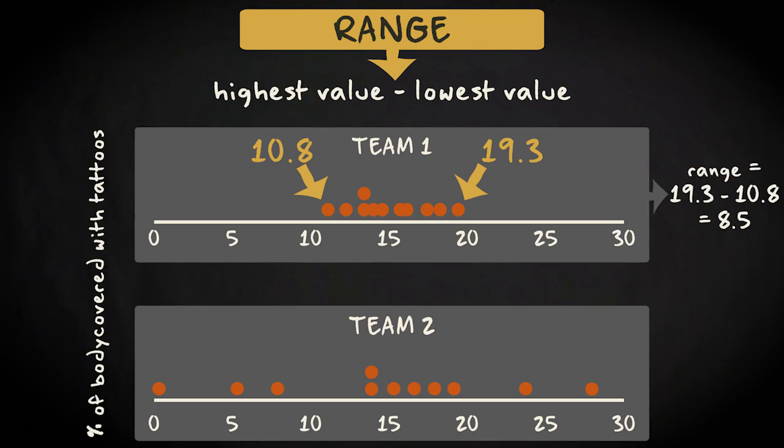In team 2, the player with the largest tattoo density has covered his body for 27.7% with tattoos, and the player with the smallest density for 0%. The range is therefore 27.7 minus 0 is 27.7.